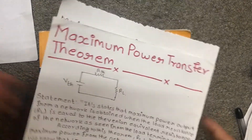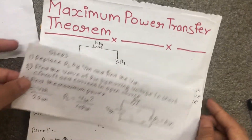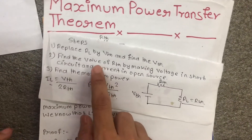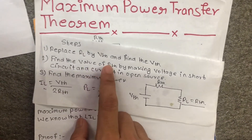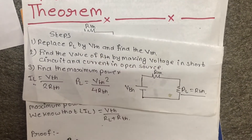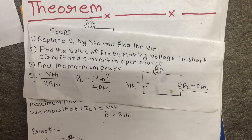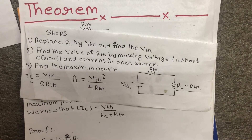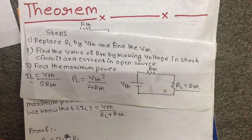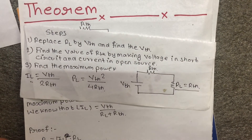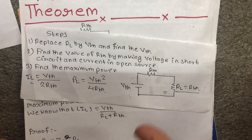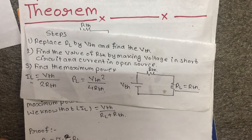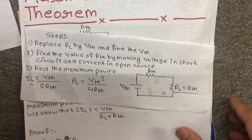In summary, the steps are: convert RL to open circuit and find Vth, then find Rth by making voltage sources short and current sources open. Then apply the power transfer formula. I hope you understand the concept of Maximum Power Transfer Theorem through this example.